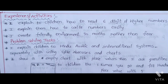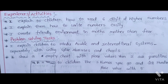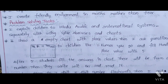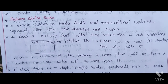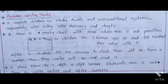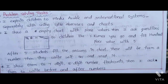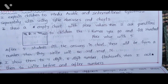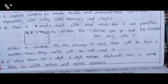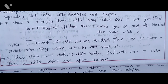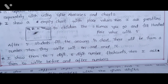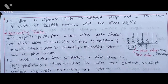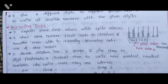Experience Activities: I explain to children how to read 6-digit and higher numbers easily and how to write numbers easily. I create a friendly environment in Maths rather than fear. Problem Solving Tasks: I explain the Hindu-Arabic and International Systems separately using a Spike Abacus and charts. I show an empty chart with place values, then ask children — for example, Kumar, go and fill the 100s place value with 5. After 5 students fill the answers in the chart, a number is formed; they write it and read it. I show 7-digit and 8-digit number flashcards and ask them to write the before and after numbers. I give 6 different digits to different groups and ask them to write all possible numbers with the given digits.